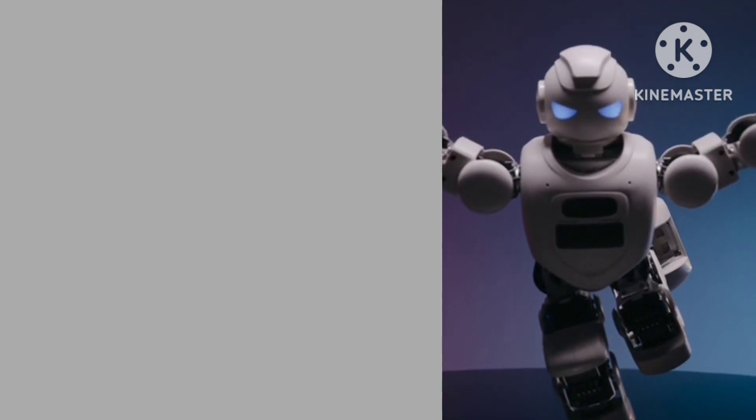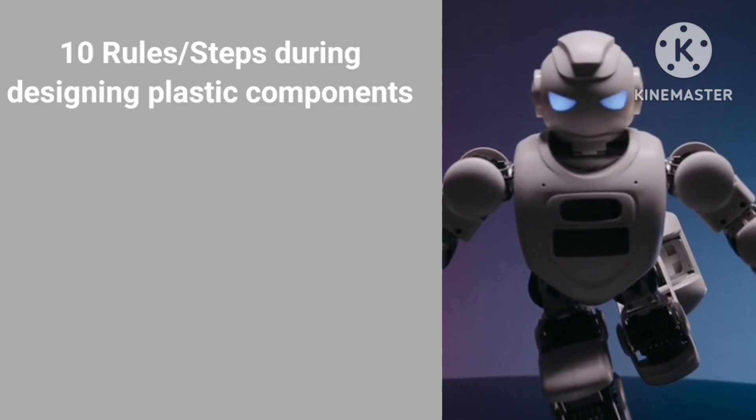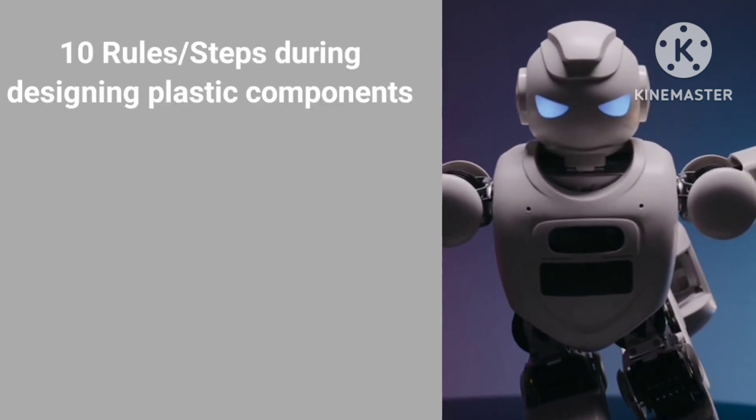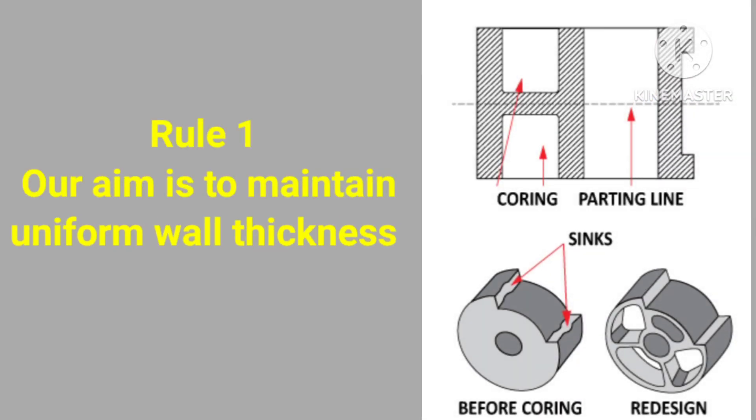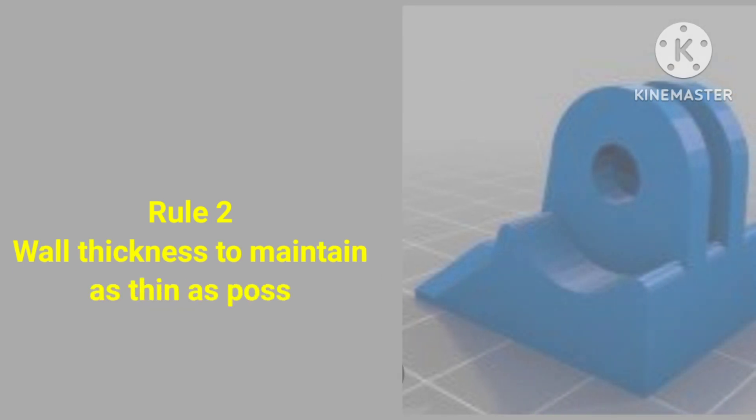The first rule is during designing of plastic part, our aim is to maintain uniform wall thickness. Second rule will be during designing we need to focus on wall thickness as thin as possible and only as thick as necessary with reference to the loading and unloading considerations.